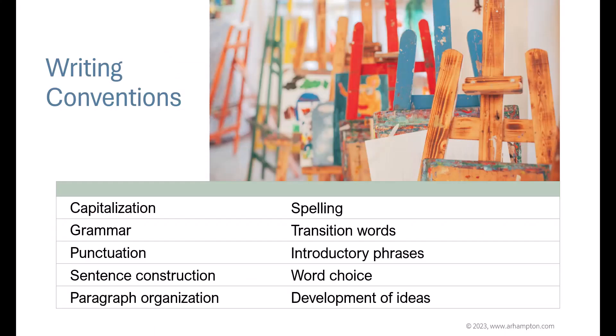Here are some writing conventions — these are things that students are scored on when they take a state standards exam, or writing proficiency exams at high schools, colleges, and universities. These are the basics you must master to do well on the exam. Number one: capitalization and all mechanics — grammar, punctuation, sentence construction, meaning subject, verb, object in the correct order, your clauses, and introductory phrases all make sense.